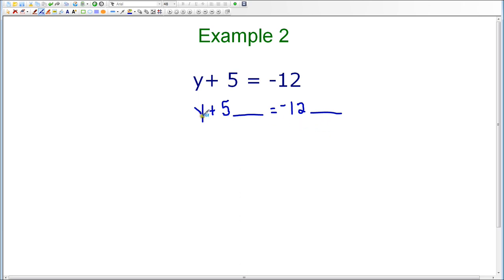Since I want to get y by itself, I need to get rid of plus 5. I also know that one of the rules for solving equations is that I need to use opposite operations. Since this equation says plus 5, I know the opposite of add is subtract. So I'm going to subtract 5 from both sides of the equation.